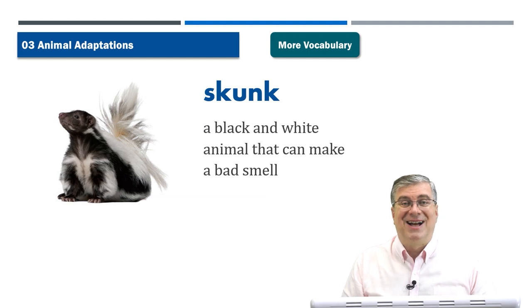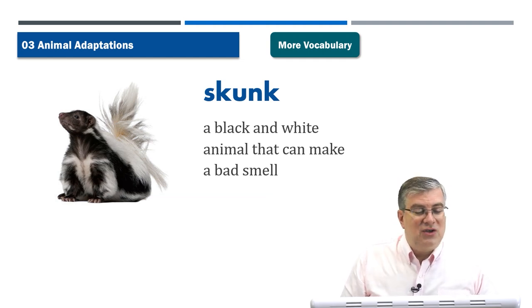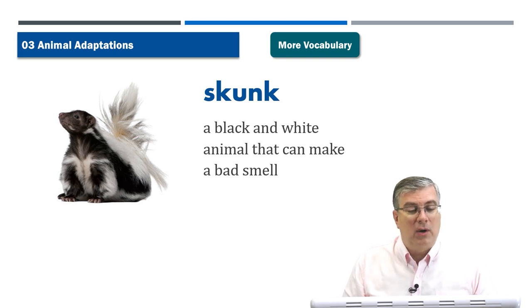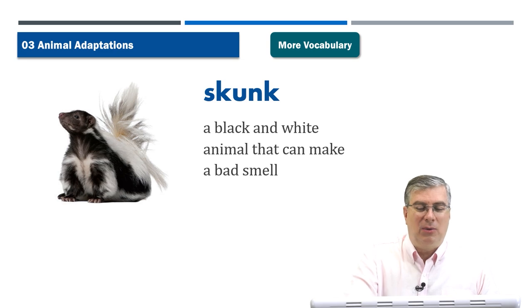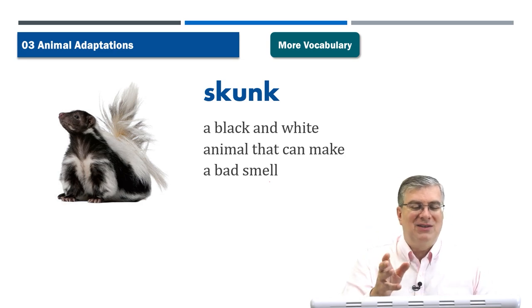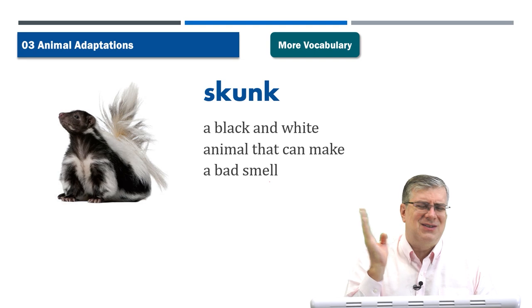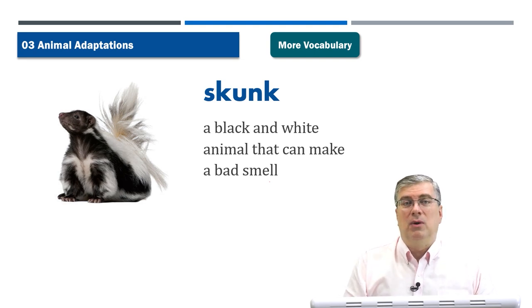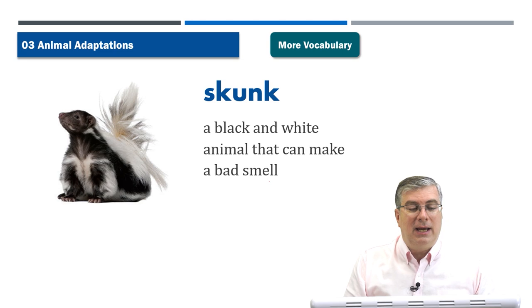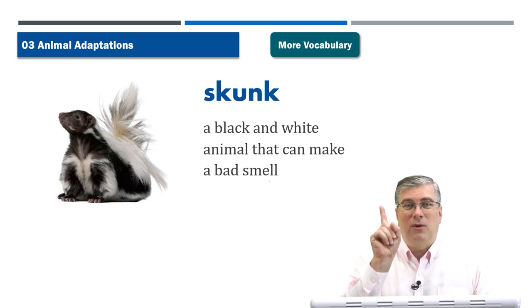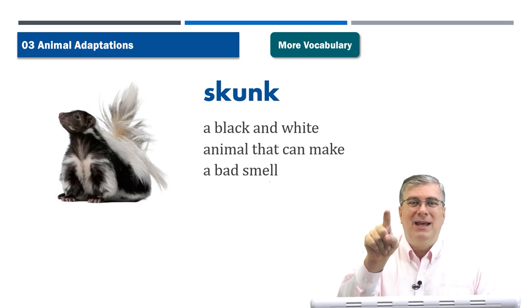Our next word is skunk. A skunk is an animal that is usually black and white, and you have to be careful around skunks. A skunk is a black and white animal that can make a bad smell. In their tail, they have glands and they can spray a really bad smelling liquid at animals that try to catch them.